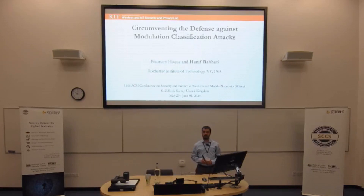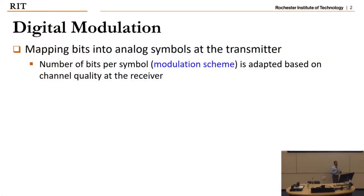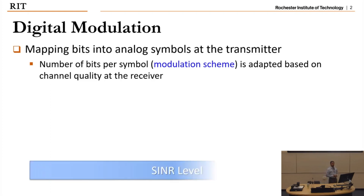The talk is mostly focused on digital modulation. As you know, in modern communication systems, digital modulation is a key component — essentially the process of mapping digital bits onto analog symbols. The number of bits mapped to a symbol depends on the channel quality or channel capacity, and the modulation scheme used based on the number of bits is also called the modulation order.